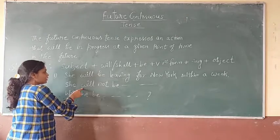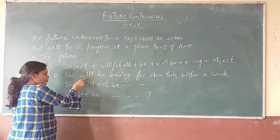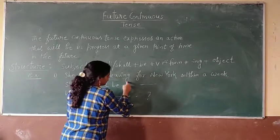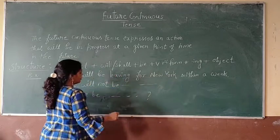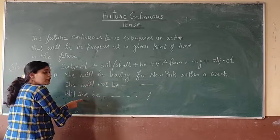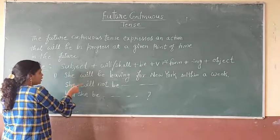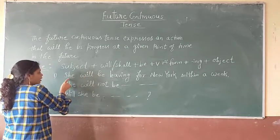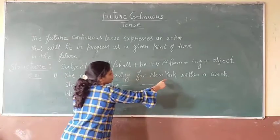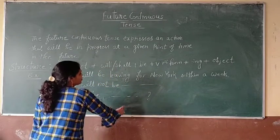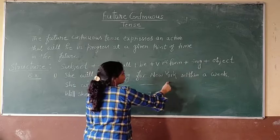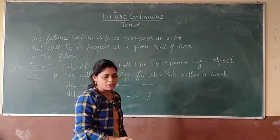Then the negative sentence. For the negative sentence you have to add 'not' after will or shall: she will not be living for New York within a way. For the interrogative: will she be living for New York within a way? The object is 'living for New York within a way'.